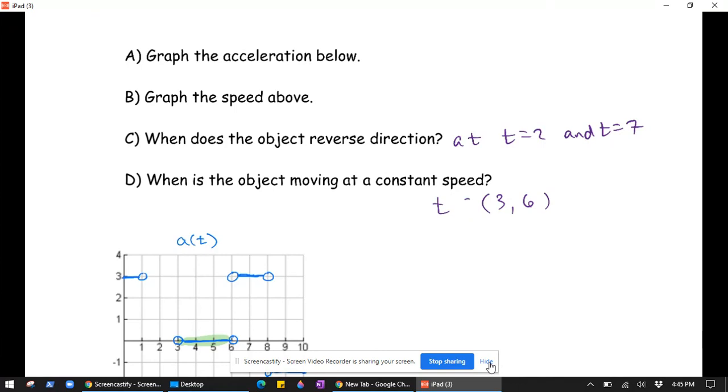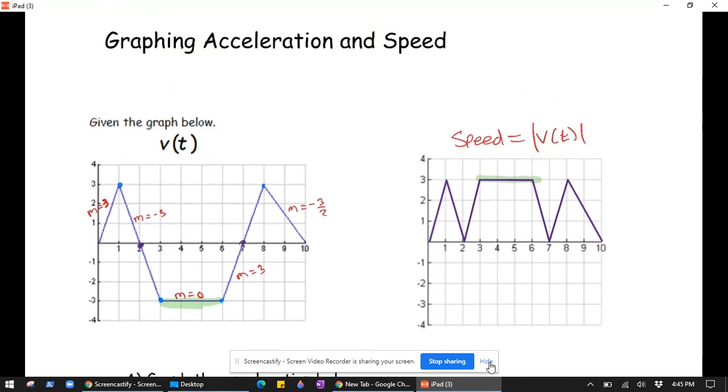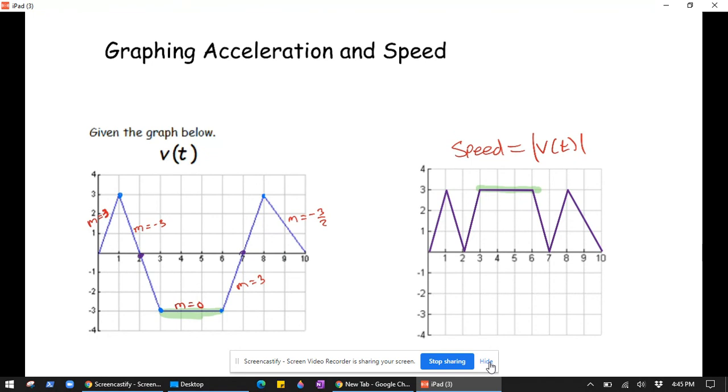I'm trying to do my set theory notation there. There, on the interval 3 to 6, it's moving at a constant speed. So there is an exercise in graphing acceleration and speed from a velocity graph.